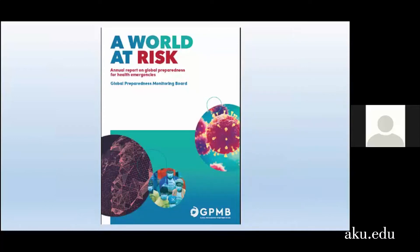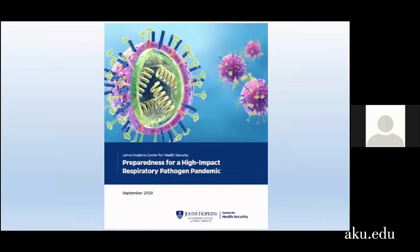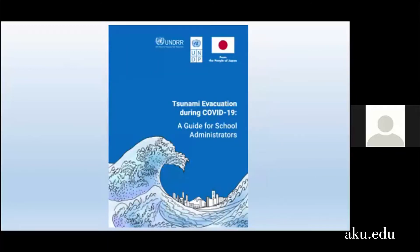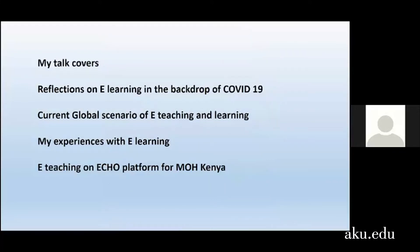This is an international report quickly released in September 2019 called 'A World at Risk.' This report talks about the dangers of pandemics and how the world should prepare for them. The faculty of Johns Hopkins public health school were on this group, which made this report on preparedness for high-impact respiratory pathogens and pandemics. They outlined how the globe should prepare, and part of that report also covers online teaching and distance learning methods. My talk covers my reflections in the backdrop of COVID-19, e-learning, the current global scenario, my experiences with e-learning and e-teaching, including what is called the ECO platform on which we are currently teaching.